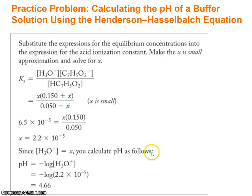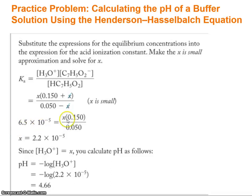Using the full equilibrium approach, Ka equals x times (0.15 minus x) divided by (0.05 minus x). Since x is small, those terms drop out, giving 6.5×10⁻⁵ equals x times 0.15 over 0.05. Solving, x is 2.2×10⁻⁵. Taking the negative base-10 log of that gives pH of 4.66.